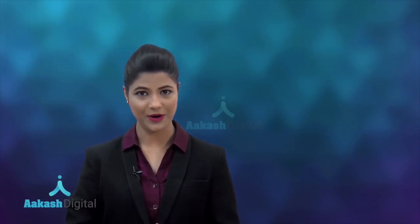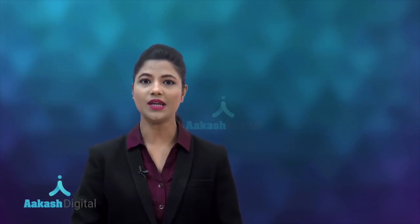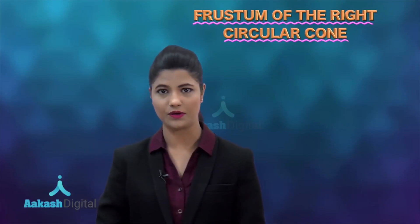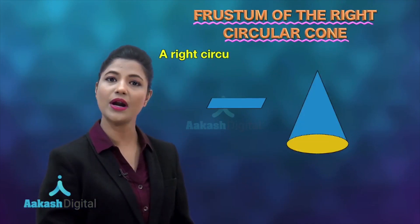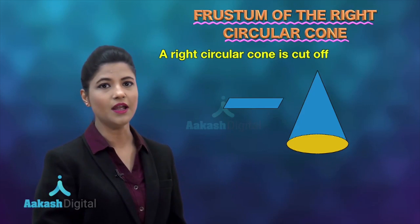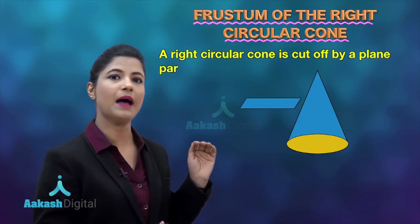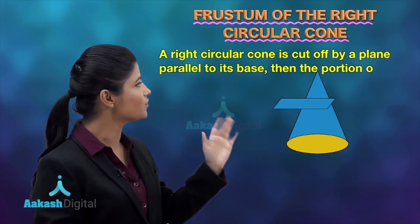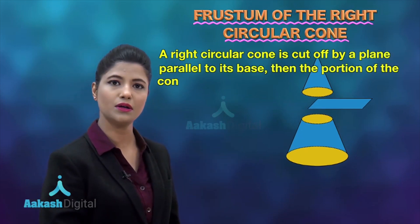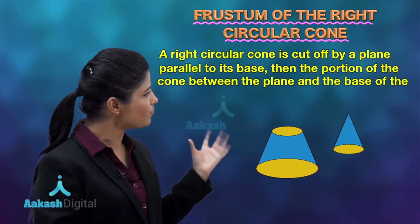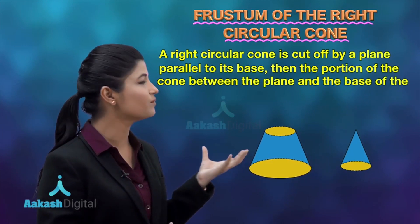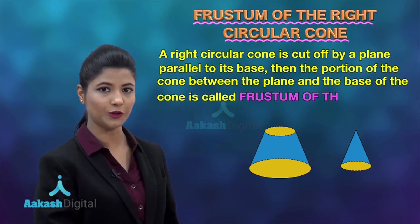Hi everyone, let's summarize today's lecture. In today's lecture you have studied about the frustum of a cone. You can observe this right circular cone — when a plane parallel to its base cuts off this right circular cone, you obtain a smaller cone and the remaining portion from the base.